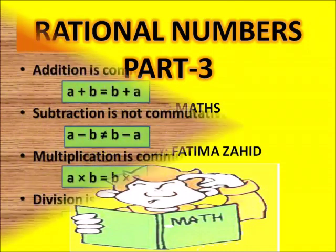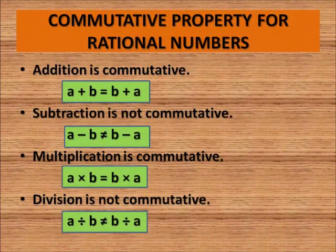Let us move on to the next property of rational numbers, and that is the commutative property. In a similar way, we will look at the commutative property of rational numbers for different operations like addition, subtraction, multiplication, and division.